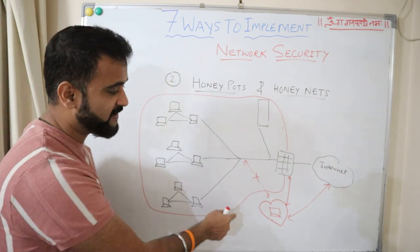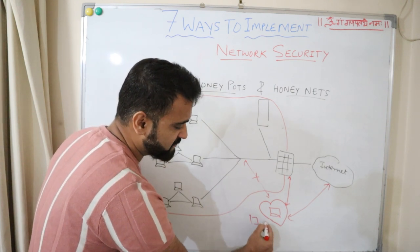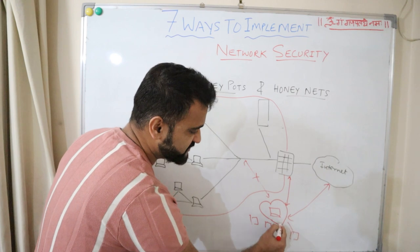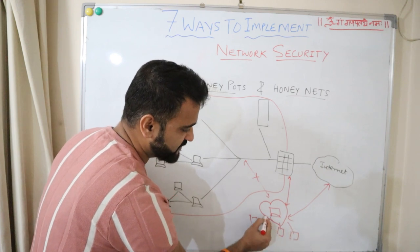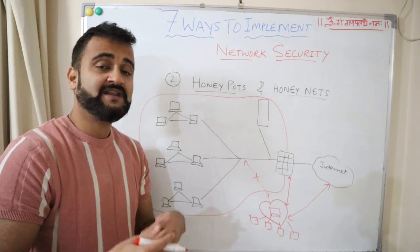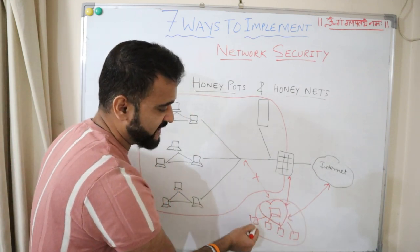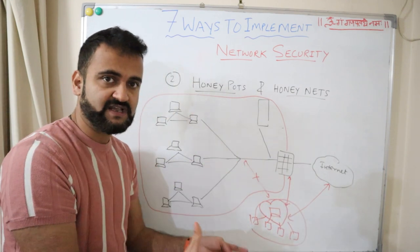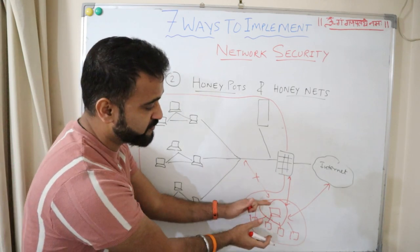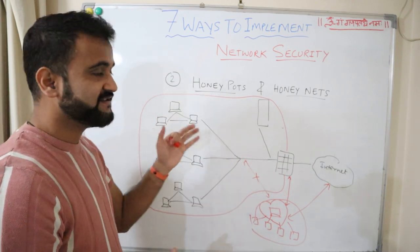As soon as that exposed machine is attacked, the attacker doesn't know there's no connectivity between it and the main network. This machine is continuously audited by cybersecurity experts so that if any malicious activity happens, they can stop it and understand the type of attack. Honeynets is just an extension of honeypots — instead of a single machine, you have a set of machines forming a network, acting as a separate subnet completely isolated from your main network.